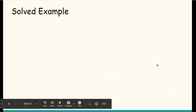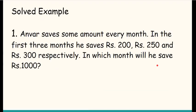Write down this question. The question says: Anwar saves some amount of money every month. In the first 3 months he saves Rs. 200, Rs. 250, and Rs. 300 respectively. In which month will he save Rs. 1000? He started saving in January with 200, February 250, March 300, and so on he is saving his money.